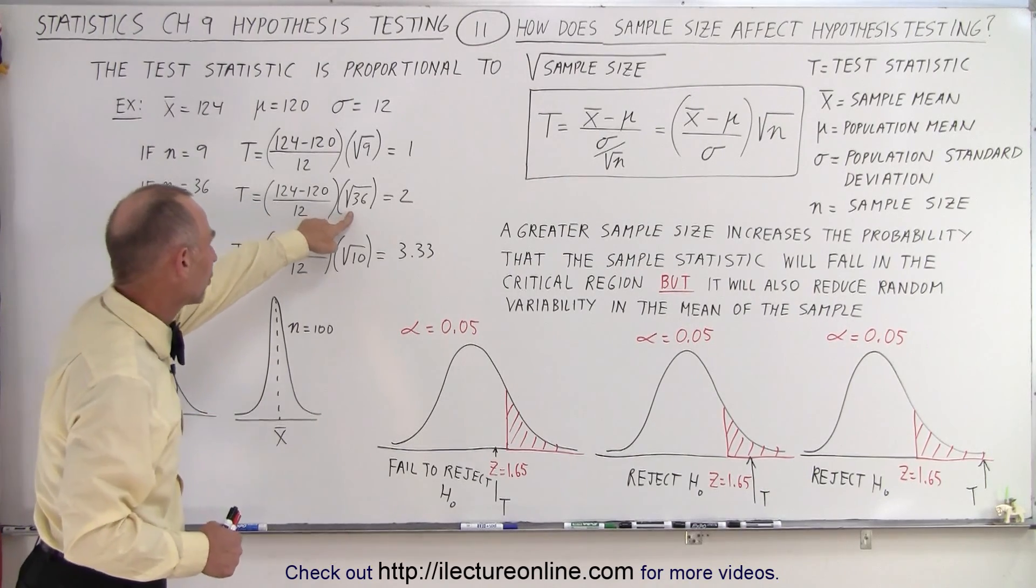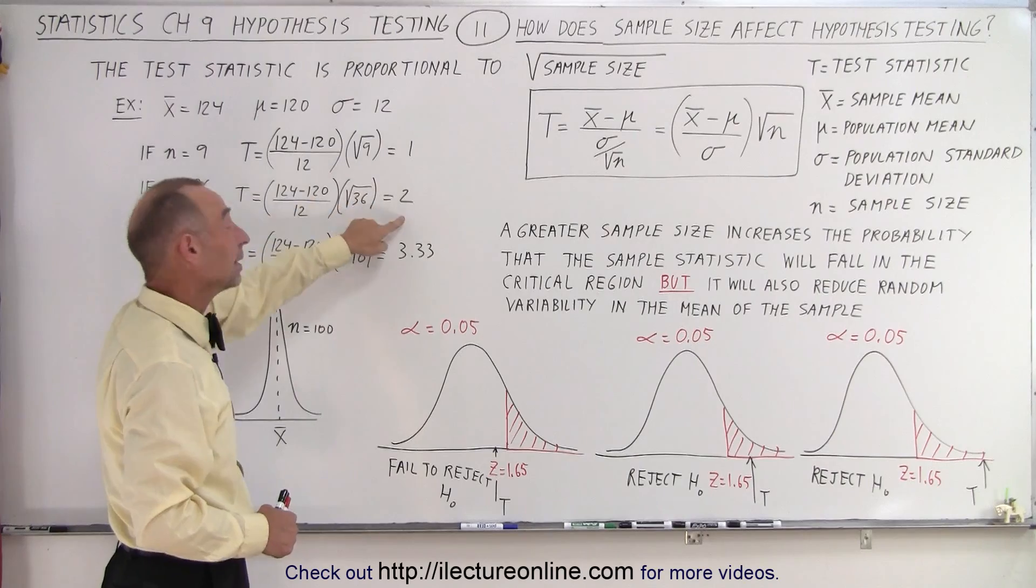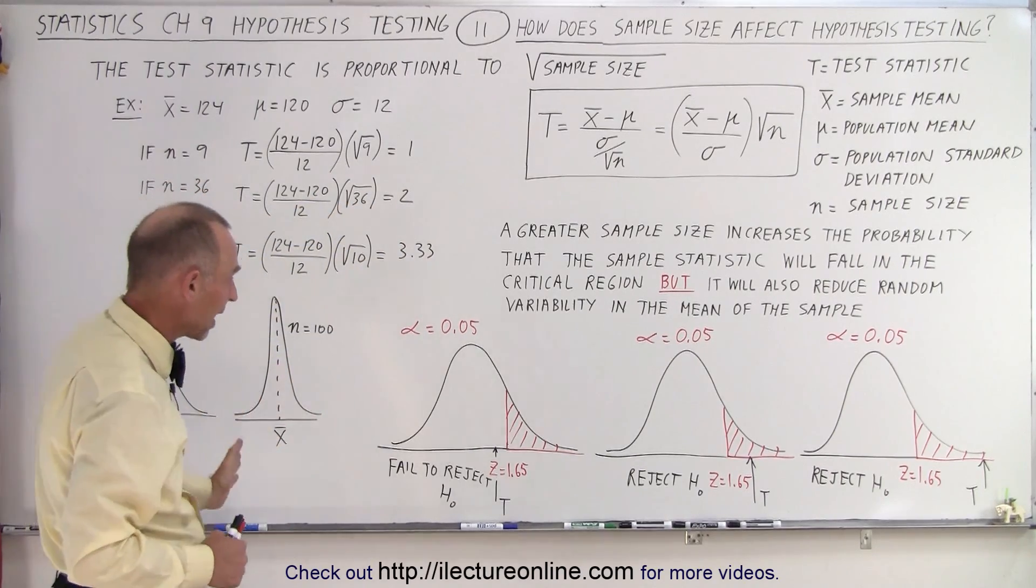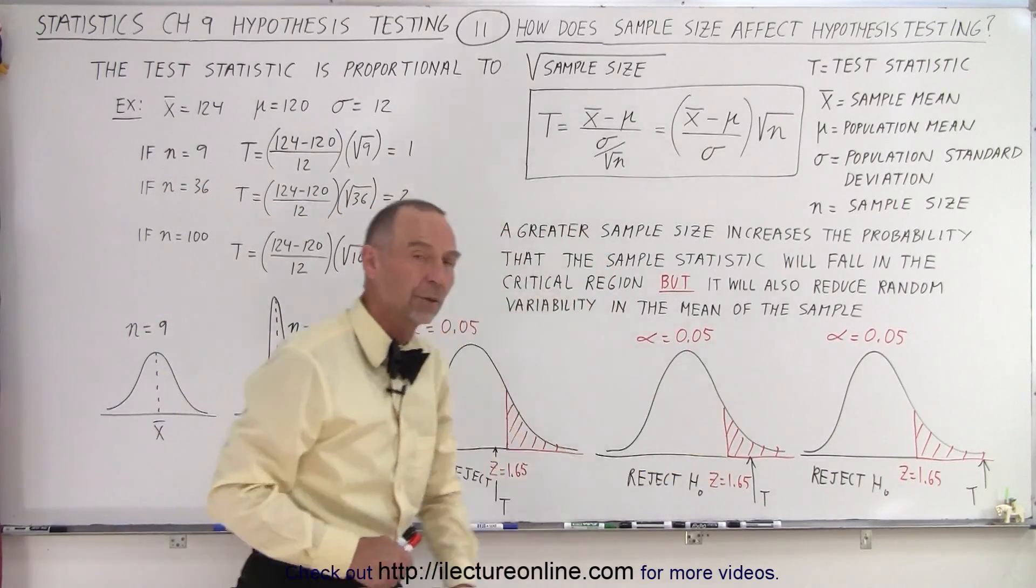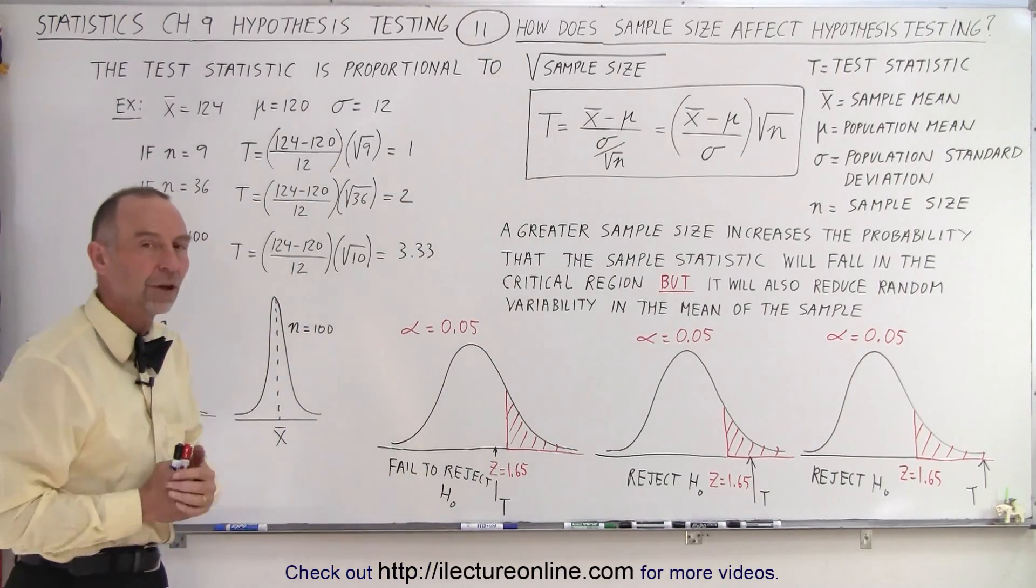So now we take the square root of the 36 which is twice the square root of the 9. And we've doubled the size of the test statistic. Now the test statistic falls in the critical region and we're going to reject the null hypothesis.